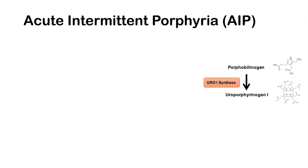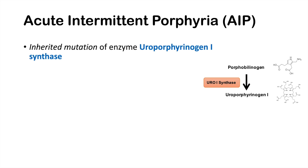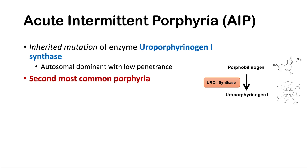The next condition is acute intermittent porphyria. AIP is due to an inherited mutation of the enzyme uroporphyrinogen 1 synthase. It is an autosomal dominant condition but has very low penetrance, and it is the second most common porphyria after PCT. Because uroporphyrinogen 1 synthase is an earlier step in the heme synthesis pathway, issues with this enzyme lead to elevations of aminolevulinic acid, or ALA, and porphobilinogen, or PBG.